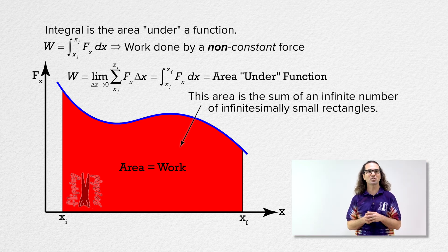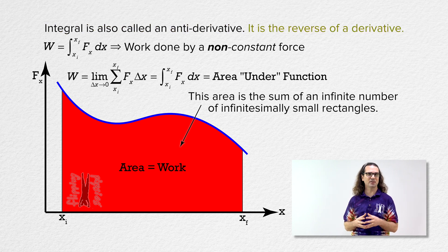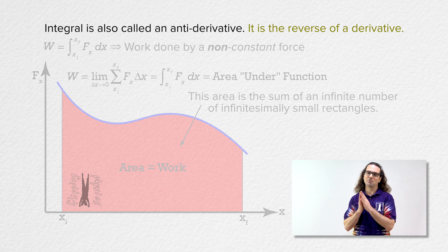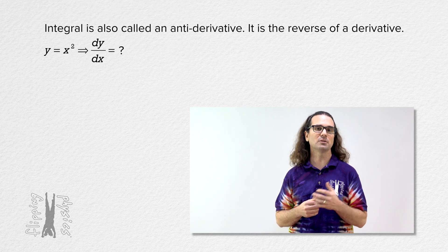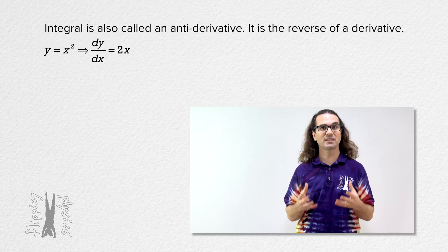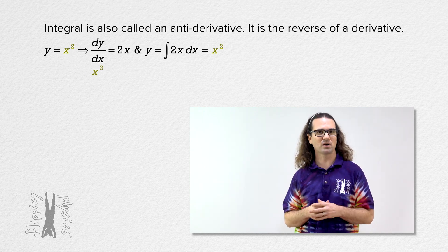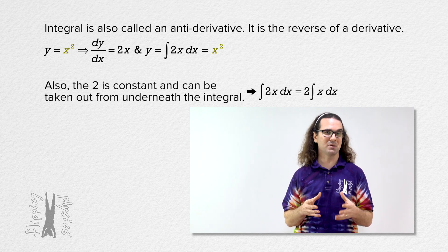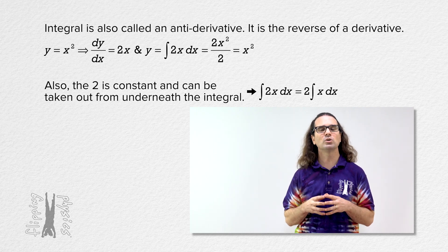Now let's actually do the math to determine an integral. An integral is also called an antiderivative because it is the reverse of a derivative. So let's start with a simple derivative. Bobby, if y equals x squared, what does the derivative of y with respect to x equal? The derivative of x squared with respect to x equals 2x. Now, because the integral is the antiderivative, we know that the integral of 2x with respect to x equals x squared. The integral of 2x with respect to x equals 2x squared all divided by 2, which equals x squared.